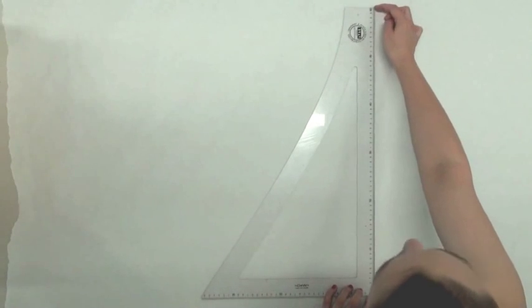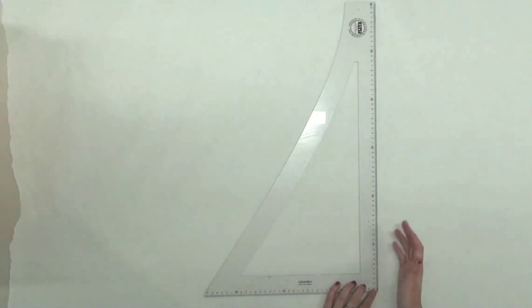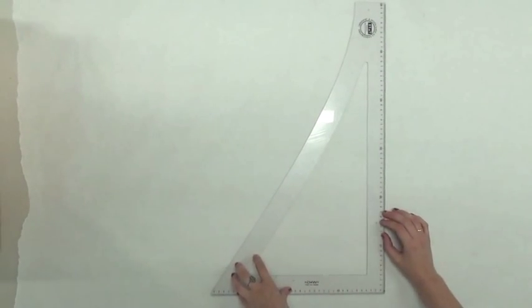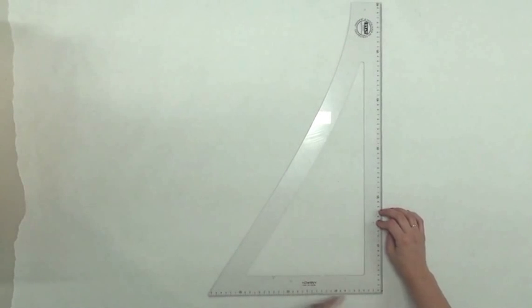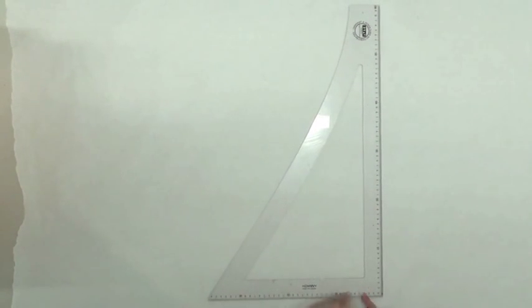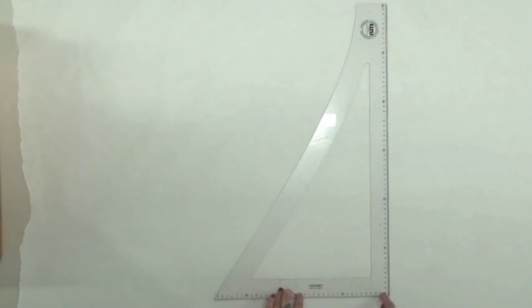The long edge is used predominantly for drafting straight long lines, something like the side seam of a skirt. This lower edge of 36 centimeters is predominantly used for squaring. That's a term we're going to investigate in the next couple of videos in more detail.